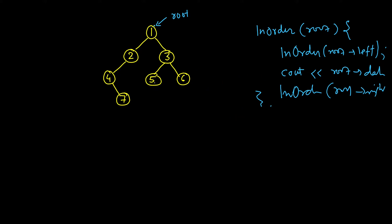So when we call inorder for one, it calls for two, it calls for four, and now there is no left so it returns and prints four. Then it calls for the right subtree where there is only seven, so seven will be printed. Then this call to four will return back to two, and then two will be printed. There is no right subtree so this will return back to one, and then one will be printed, and then the same thing for the right subtree.